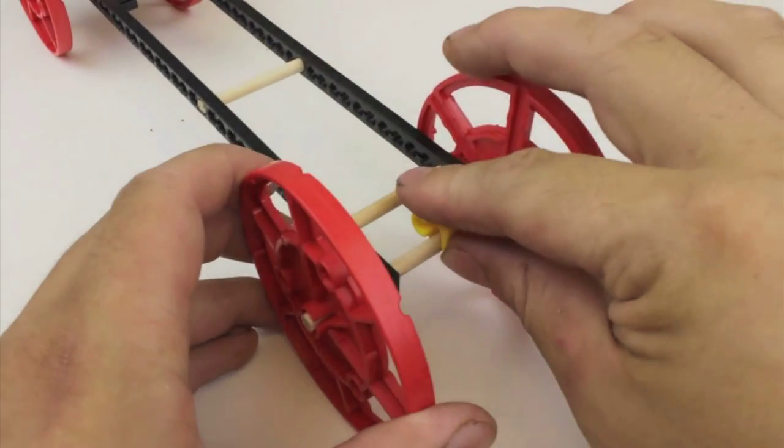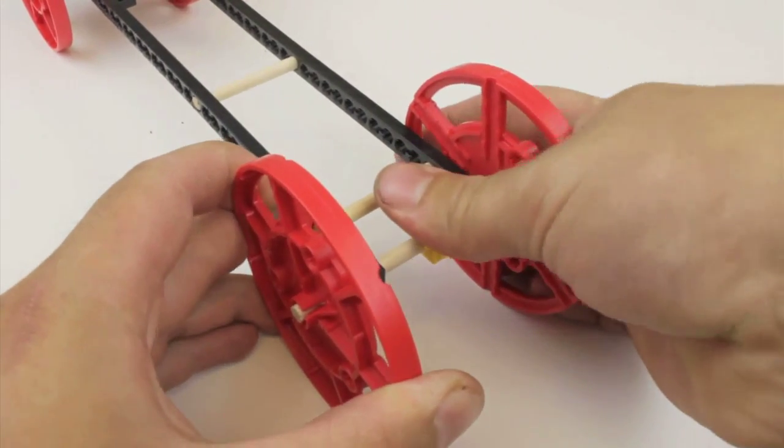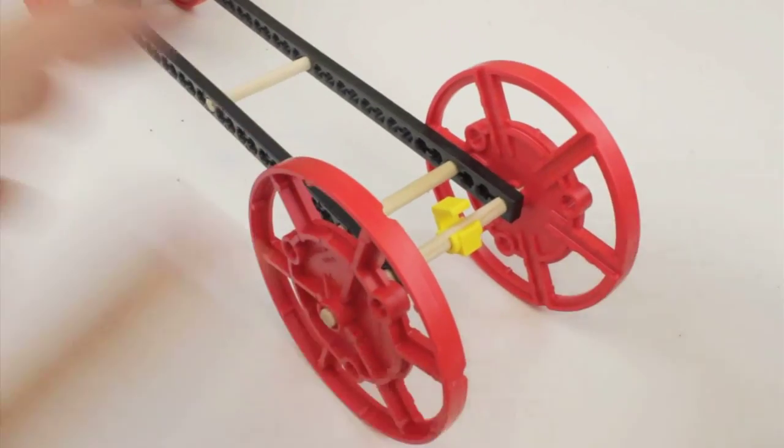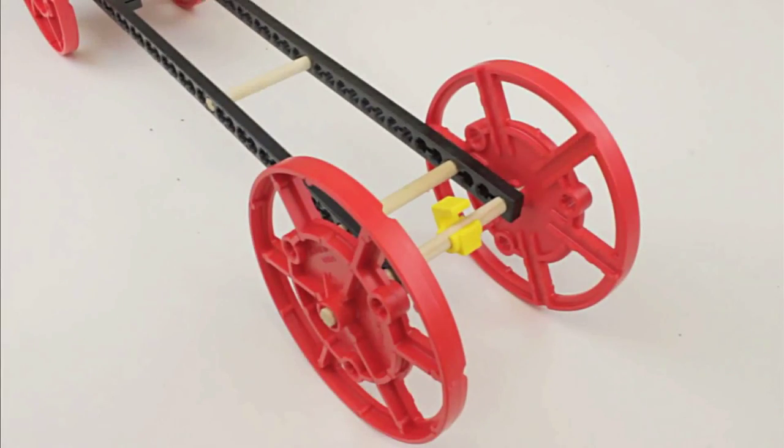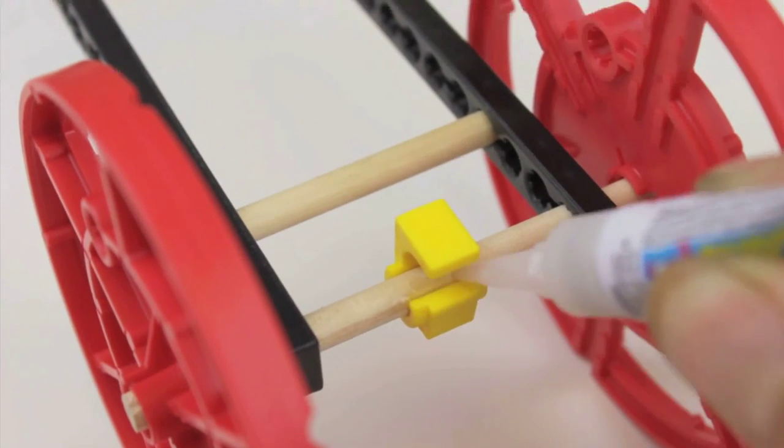Set your stop clip onto the back dowel. Snap on the stop clip by pushing downward and make sure your stop clip is facing away from the racer when up. The stop clip may slip when pulled on. This can be prevented by adding a drop of glue.